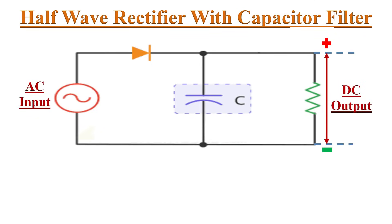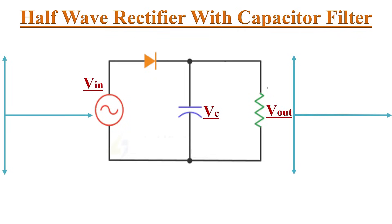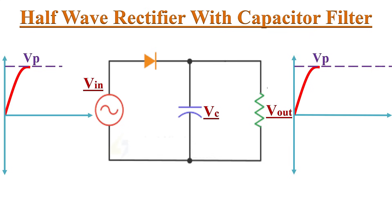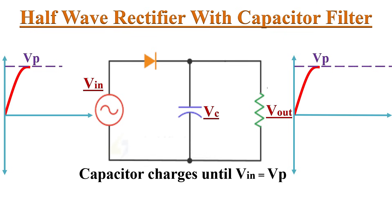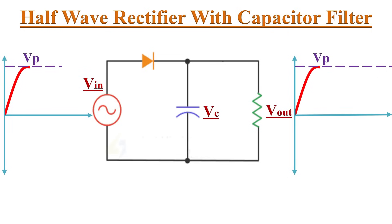The ripple in the output can be reduced by using a filter circuit. Just by connecting a capacitor across the load resistor we can smooth out the ripples in the output waveform. Assuming an ideal diode, initially the capacitor is uncharged. During the first quarter cycle of the positive half, the diode is forward biased and acts as a closed switch, so the capacitor starts charging. The charging continues until the input reaches its peak value, at which point the capacitor voltage equals Vp.